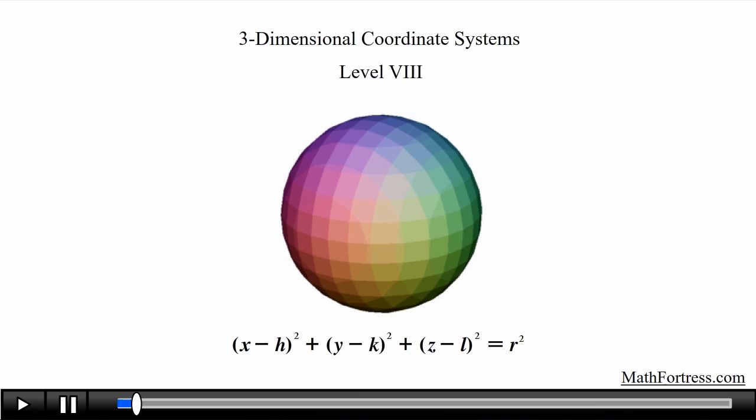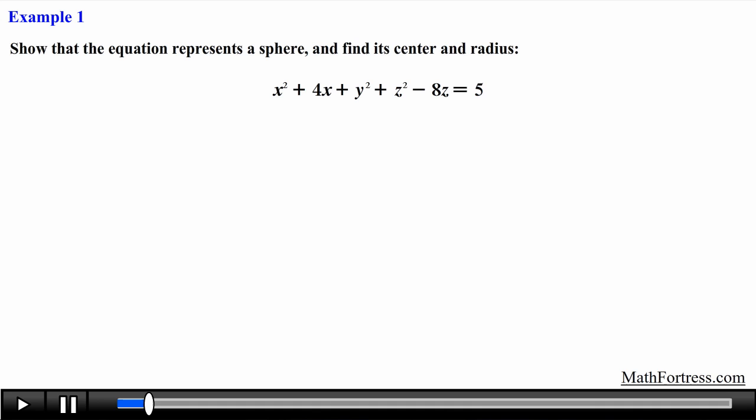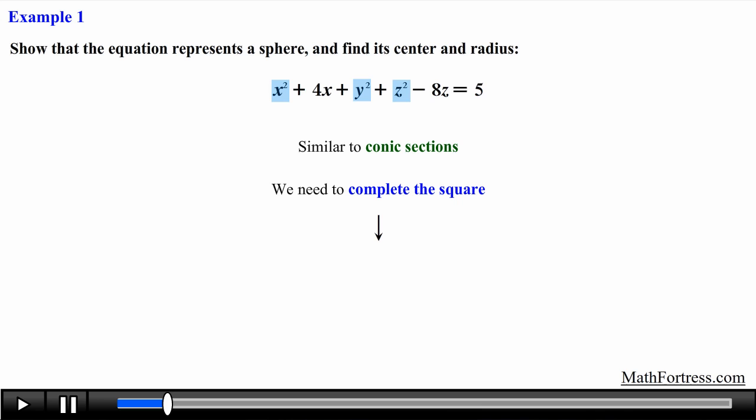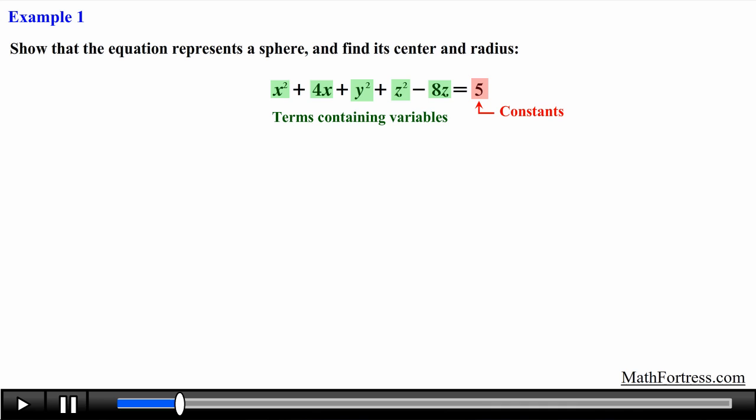Let's go over an example where the equation of a sphere is not written in standard form. Show that the equation represents a sphere and find its center and radius. This problem is similar to problems from pre-calculus, especially when learning about conic sections. Because these equations contain a quadratic term — a power function of degree 2 — we need to complete the square to obtain the binomial-squared form characteristic of a sphere equation. The first step is to collect like terms and move the constants to one side of the equation.